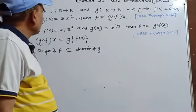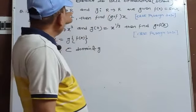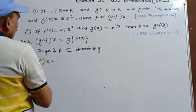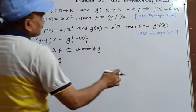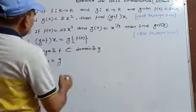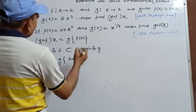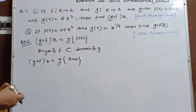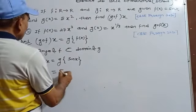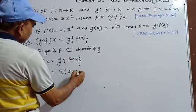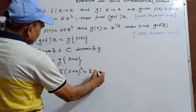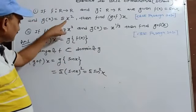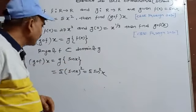gof(x) = g(f(x)) = g(sin x). Since g(x)=5x², substituting sin(x) for x gives g(sin x) = 5(sin x)² = 5sin²x. Wherever x was written in g(x), we put sin(x).